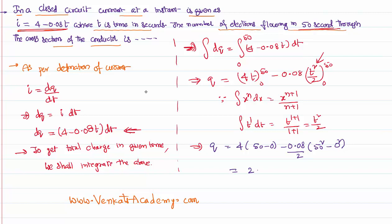So the value is 4 into 50 is 200 minus 0.04 into 50². 50 times 50 is something like 2500. So simplifying this...